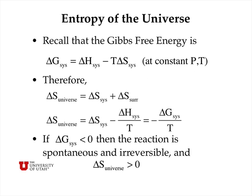Recall that the Gibbs free energy is delta G for the system equals delta H minus T delta S for the system, at constant pressure and temperature. Because delta S of the universe equals the sum of delta S for the system and the surroundings, we can say that delta S for the universe equals delta S for the system minus delta H for the system divided by T — which is just minus delta G over T. So if delta G of the system is less than zero, then the reaction is spontaneous and irreversible, and the entropy of the universe is greater than zero.